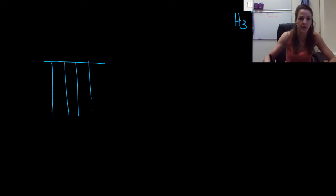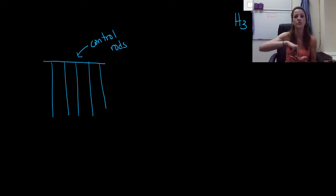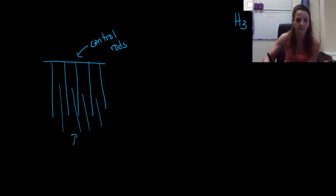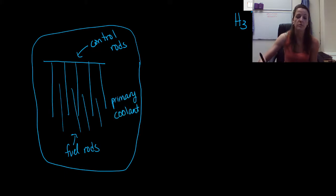Let's draw through the full system. We have our fuel assembly — the big box with control rods and fuel rods. Control rods can be inserted to slow the reaction or pulled out to let more reactivity happen. The primary coolant completely surrounds the fuel assembly. It does two things: it pulls energy away from the fuel rods, and it also absorbs any excess neutrons that escape. We then pump the primary coolant into what's called a steam generator.